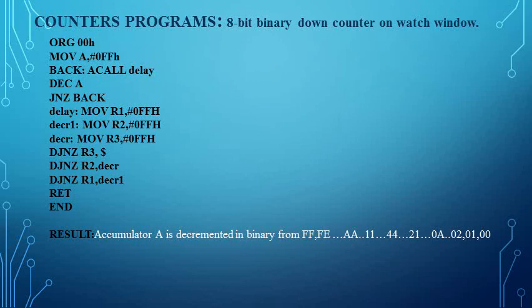We keep performing the decrement operation until A becomes zero. Once the count value reaches zero, it will go back and call the delay again. This process continues until the count value reaches zero. After the main program, we write a subroutine for the delay. We randomly load R1, R2, and R3 with some values and use DJNZ instructions for R3, R2, and R1. Once all three register values become zero, the subroutine terminates and the RET instruction returns control to the main program.